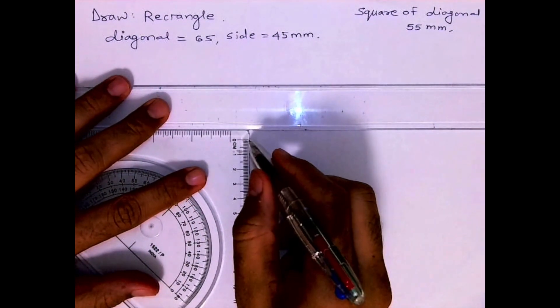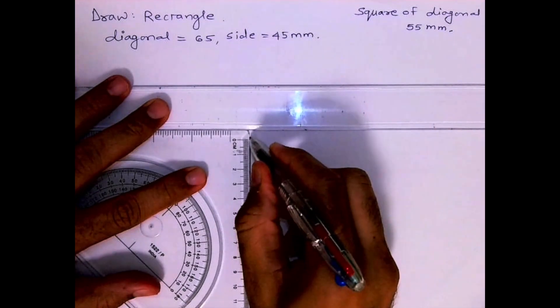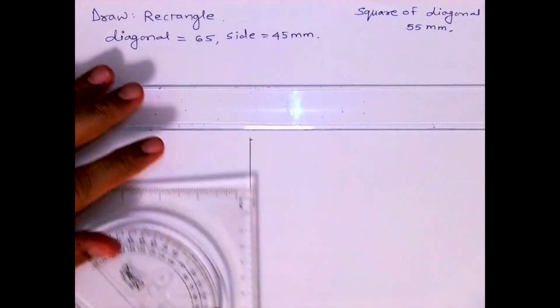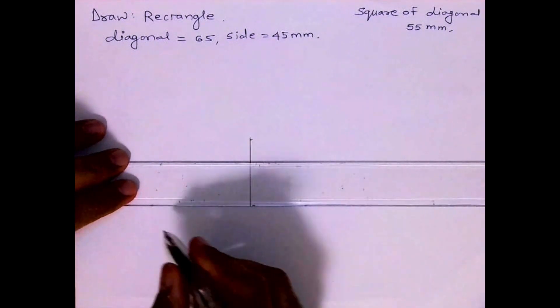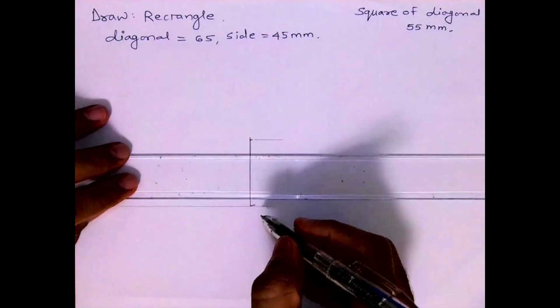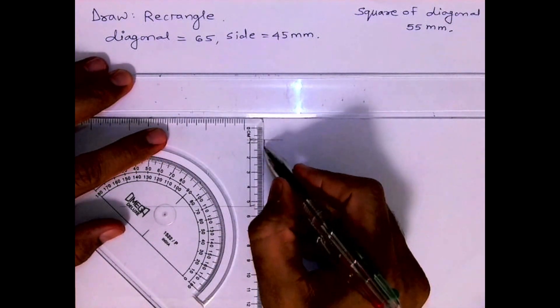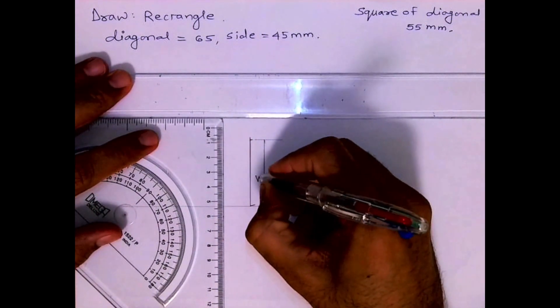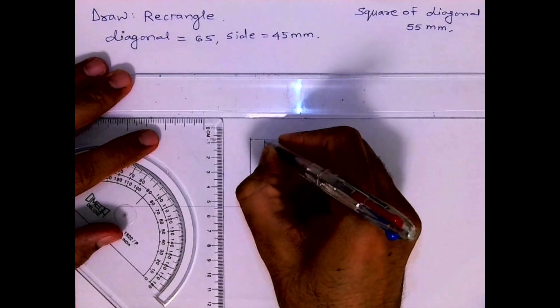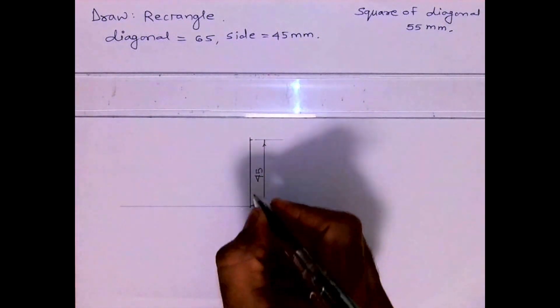So what we will do first, we will draw side 45, then we will draw horizontal line. Then we know one diagonal, right? How much is the diagonal? 65. See, this is 45, this is one of the side.